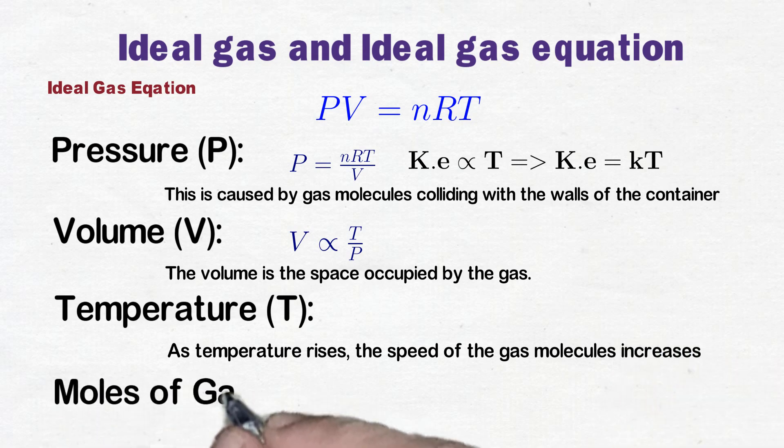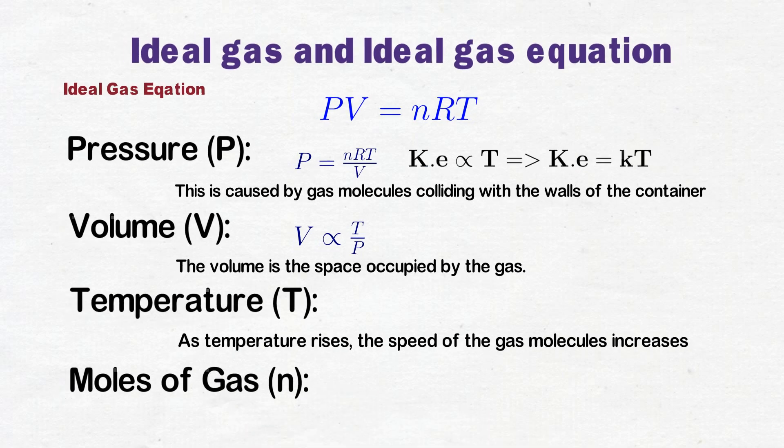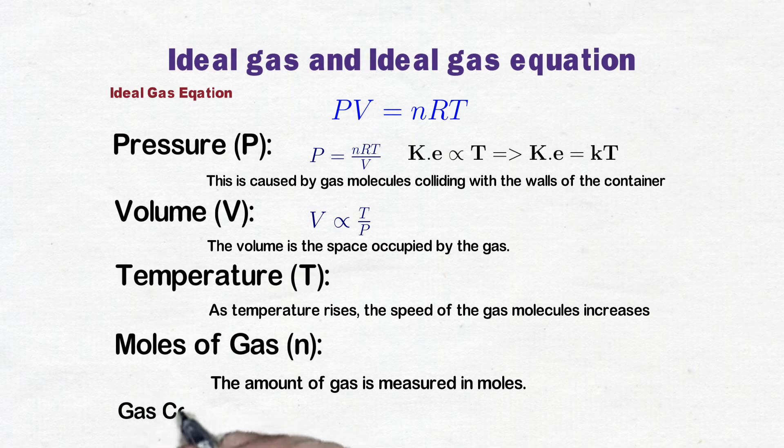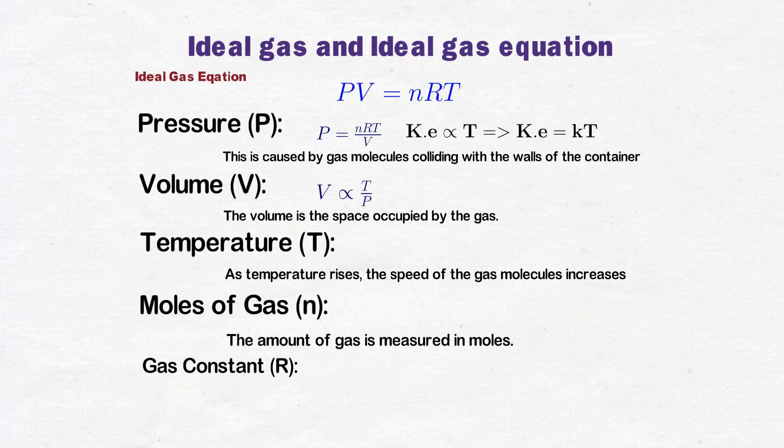Where the small n represents number of moles, and the amount of gas is measured in moles. More gas molecules means more collisions with the container walls, increasing the pressure if volume and temperature are kept constant. Where R is the gas constant, the gas constant provides the proportionality factor to relate pressure, volume, temperature, and the number of moles.